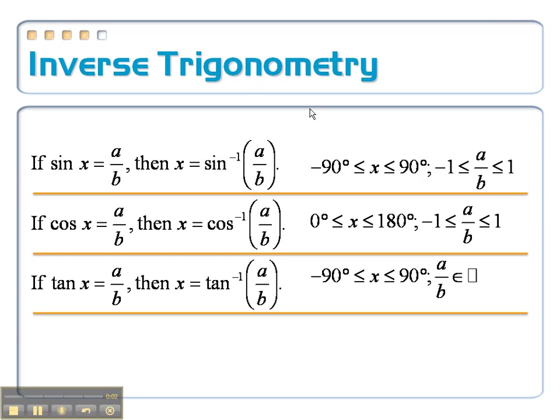All right, we have been talking about some inverse trigonometry. So in each of these things, the x is the angle measurement. This is the ratio over here. So to work backwards, the angle measurement is equal to the inverse sine of the ratio.